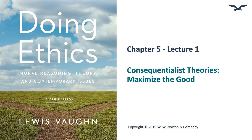This is our first lecture for Chapter 5 in Lewis Vaughn's Doing Ethics, and in this lecture we're going to be looking at consequentialist moral theories. The easiest way to think about consequentialism is that an action is considered morally right if it produces the best possible consequences. That's what consequentialism means — it's an attempt to maximize the good.